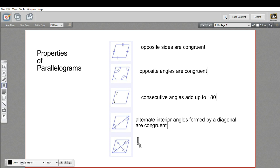And then finally, the diagonals, if you draw in both diagonals, they bisect each other. So they cut each other exactly in half. So those are properties of parallelograms. Let's see if we can use them to answer a few questions.